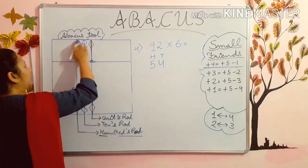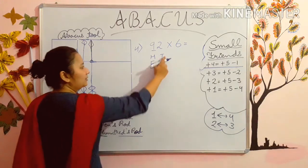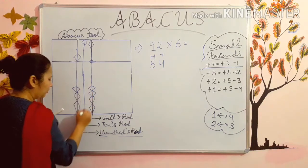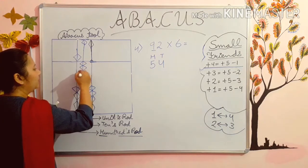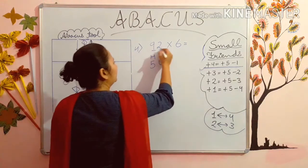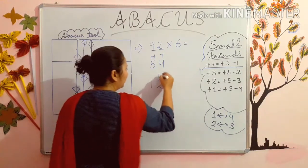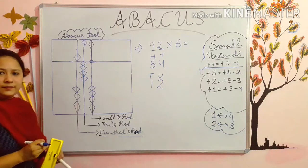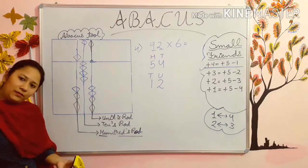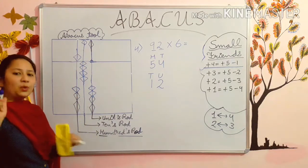As you know you have to multiply your first digit with 6. 9 sixes are 54 — this in tens rod and this in hundreds rod. So first of all 5 in hundreds rod and 4 in tens rod. Add 4 means put the beads up. Done. Now multiply the next digit with 6. 2 sixes are 12. Now this will go in units rod and this will go in tens rod. Now see — 1 you have to add in tens rod. You have added 4 already, now you have to add 1 but it is not there. So you will use the small friends formula.